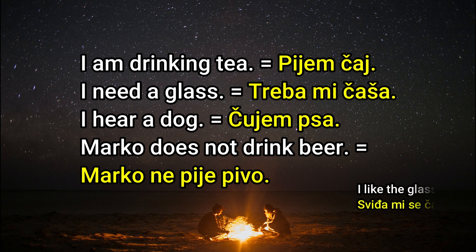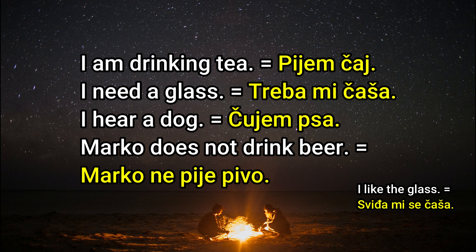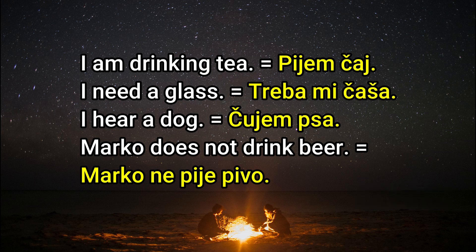The construction 'I need' is different, similar to 'I like.' The glass is actually the subject — we say something like 'glass is needed by me' - treba mi časa. I hear a dog - čujem psa.